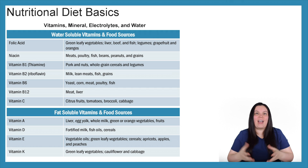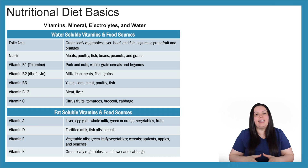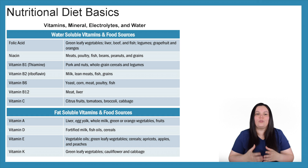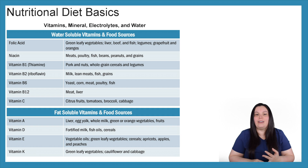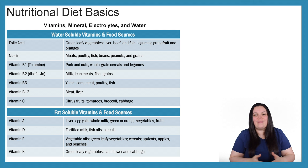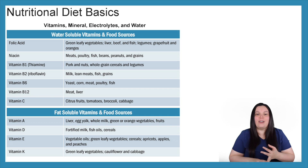When it comes to our water-soluble vitamins and food sources, folic acid can be obtained through green leafy vegetables, liver, beef, and fish, legumes, grapefruit, and oranges. Niacin can be obtained through meats, poultry, fish, beans, peanuts, and grains. Vitamin B1, known as thiamine, which we give a lot to our chronic alcohol patients, is found in pork, nuts, whole grain cereals, and legumes. Vitamin B2 can be obtained through milk, lean meats, fish, and grains. Vitamin B6 through yeast, corn, meat, poultry, and fish. Vitamin B12 through meats and liver. Vitamin C through citrus fruits, tomatoes, broccoli, and cabbage.